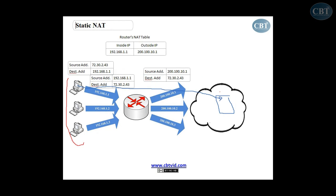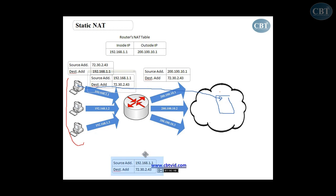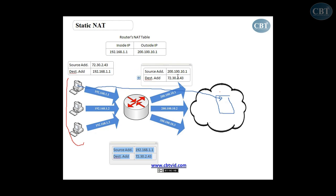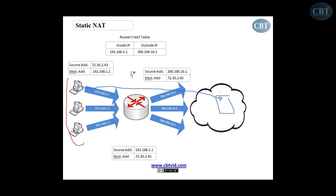But when I use static NAT, I statically configure that this address, 192.168.1.1, when it goes to the router, the router assigns 200.100.10.1 to that computer. So what's the point of having this private address and at the same time a public address assigned to it? Why don't I directly assign the public address to that computer so I don't need to configure NAT?